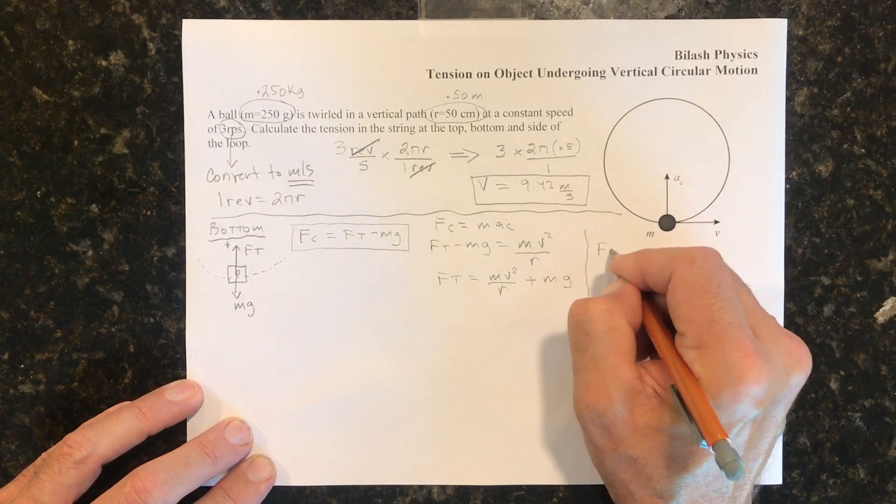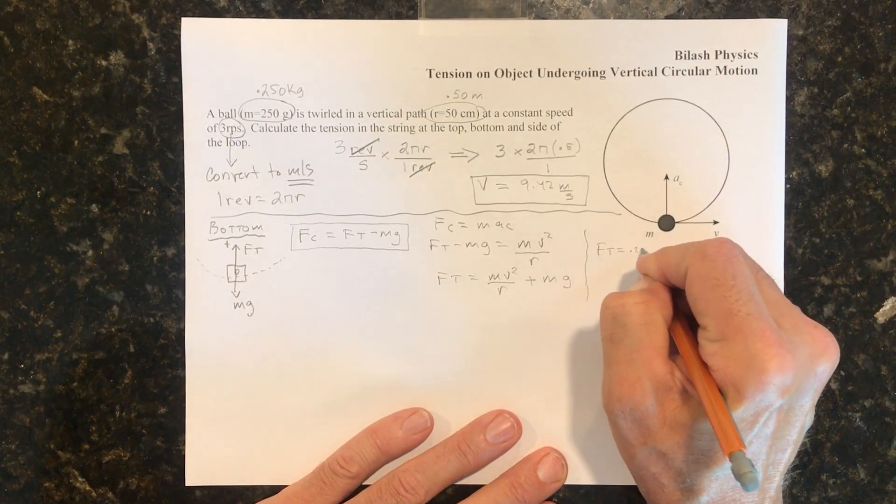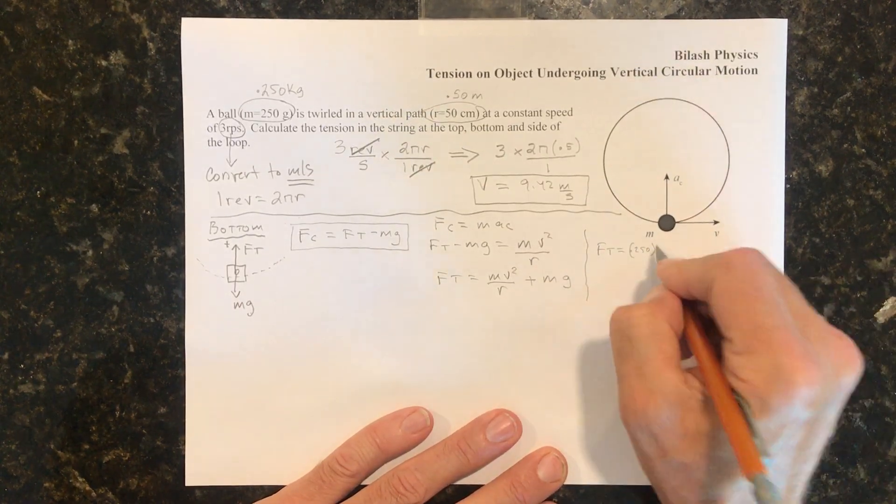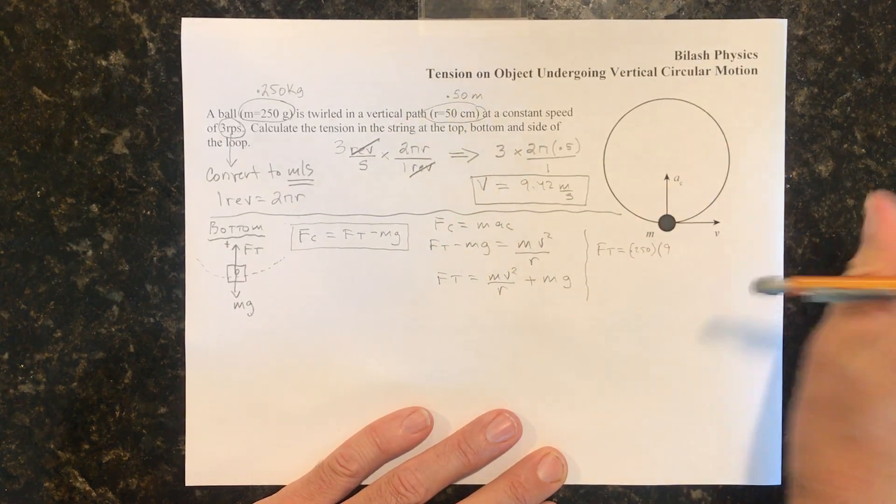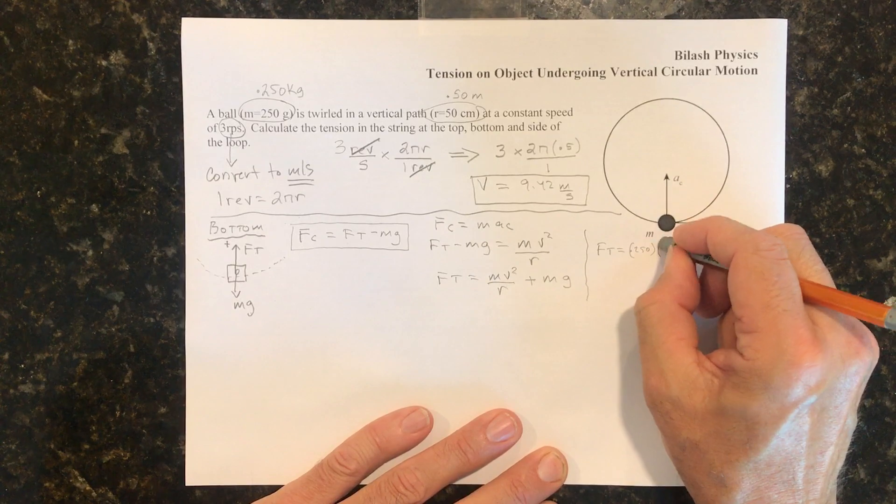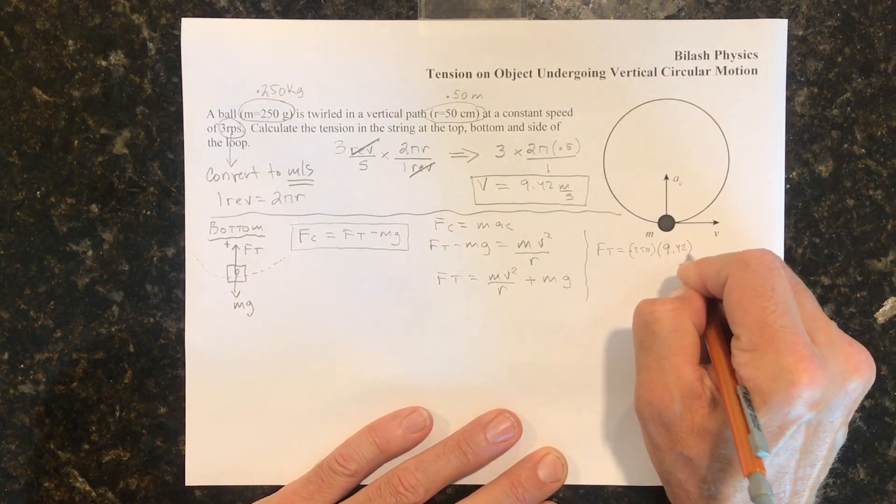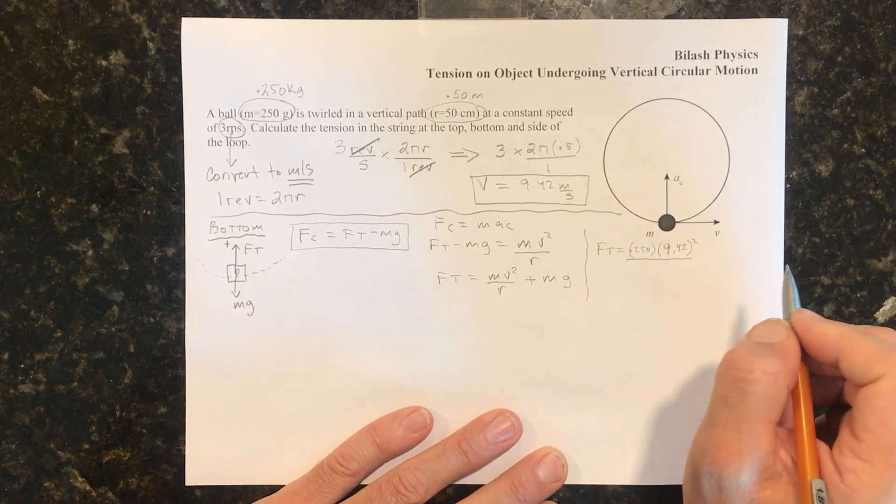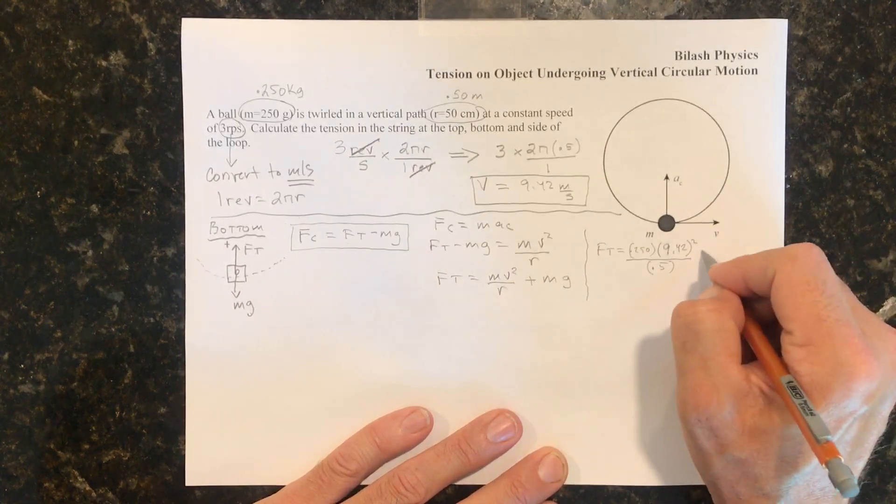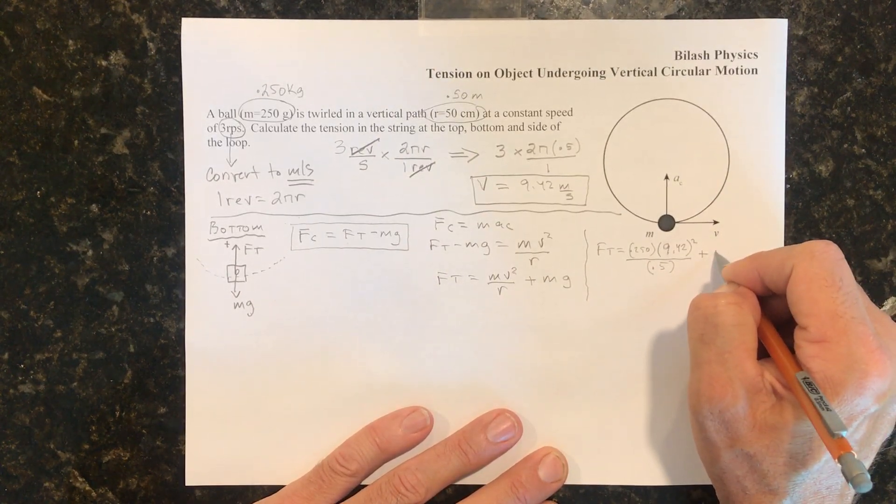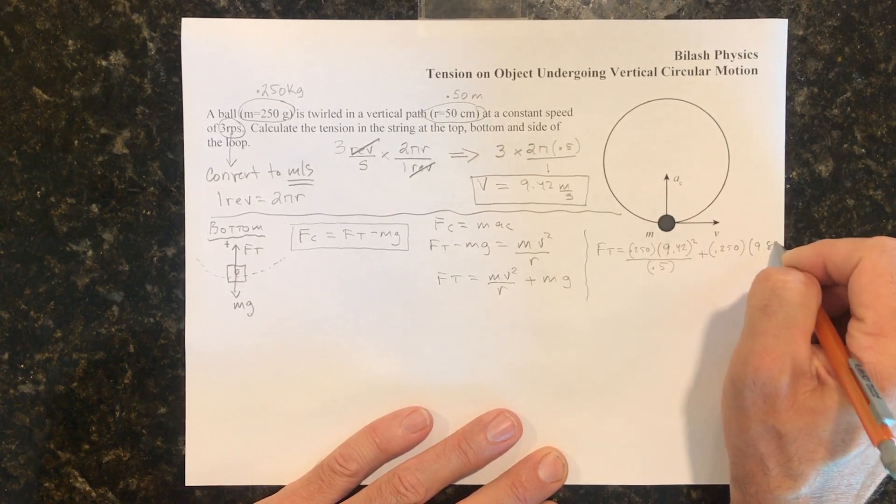So I'll continue over here on the right. So Ft is going to be equal to the mass, which is 0.250 times v squared, which is 9.42 squared, divided by r, which is 0.5. And we're going to add mg to that, which is 0.250 times 9.81.